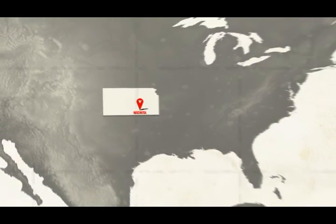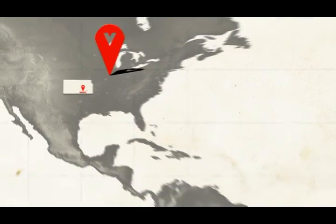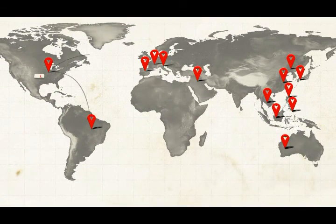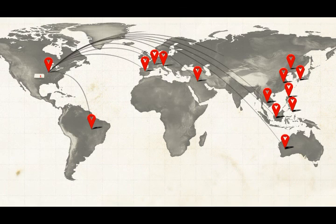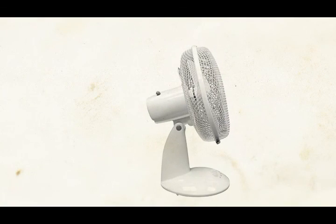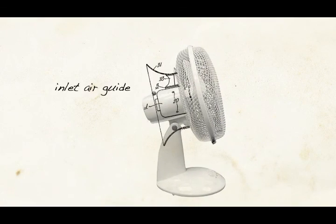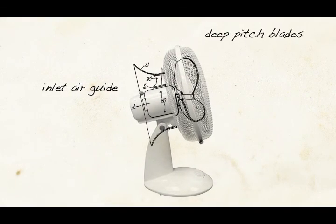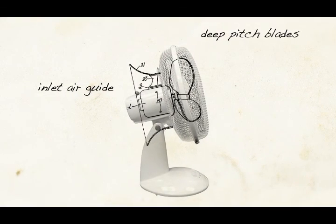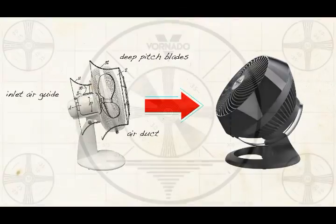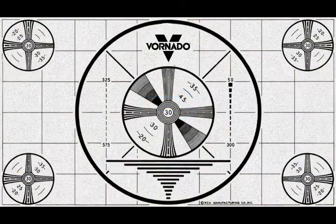Here, Vornado continues to assemble many models for sale throughout the world. It is also from Andover that Vornado provides unparalleled product support, which is important because when you build a product that's so different from the usual suspects, you need a knowledgeable team to answer questions like, what's the difference between a fan and a whole room circulator? But of course, you now know the answer to that question.